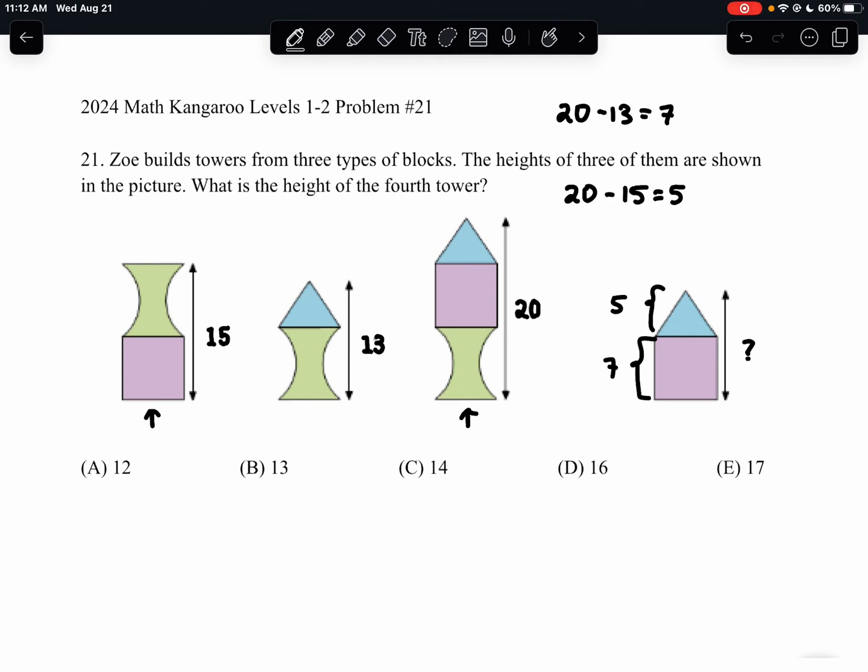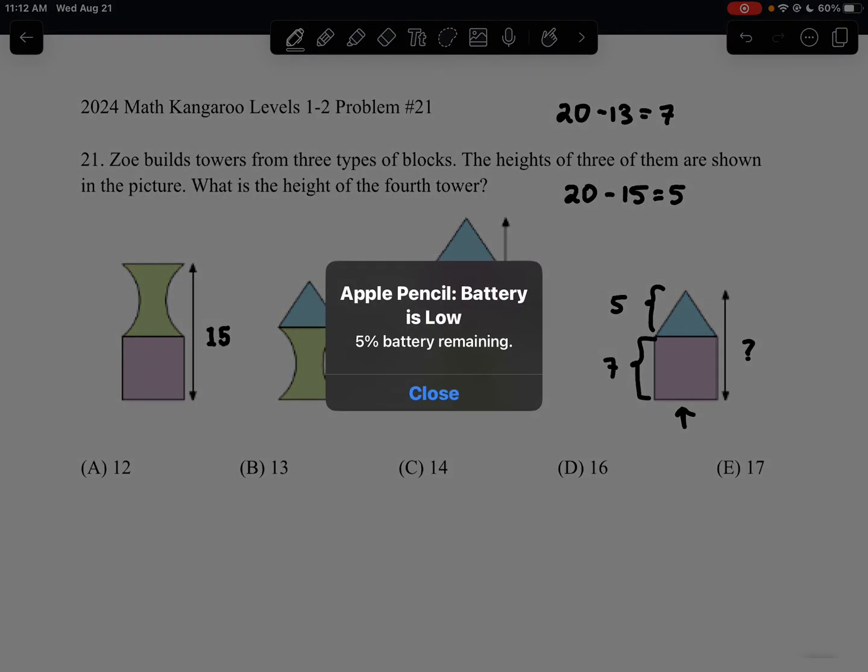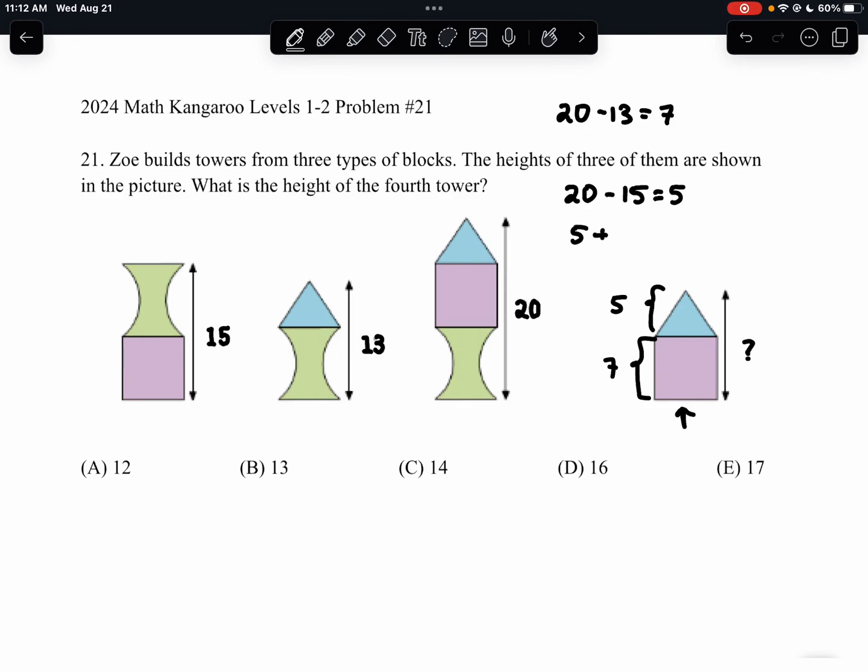So now, to figure out the height of this figure right here, which is the blue triangle on top of the purple square, we take 5 plus 7, which gives us a total of 12 units, and we see that this is answer choice A.